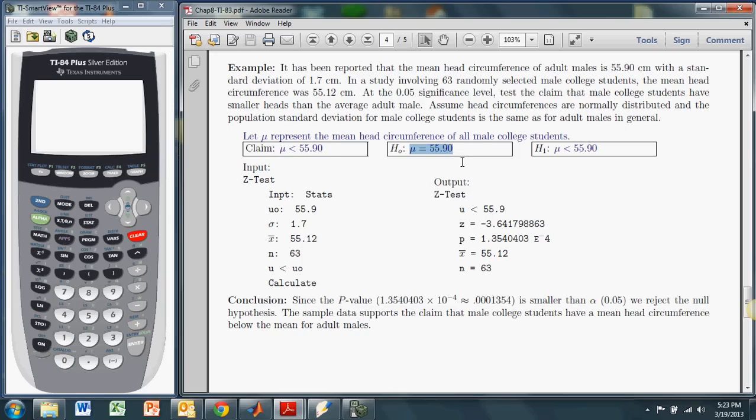And the null hypothesis gets the equal to sign. And the alternate, in this case, will support the claim. And so now we have it all set up, and we will let the calculator do most of the hard work for us.